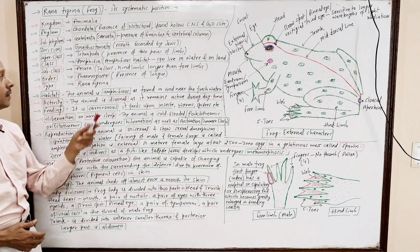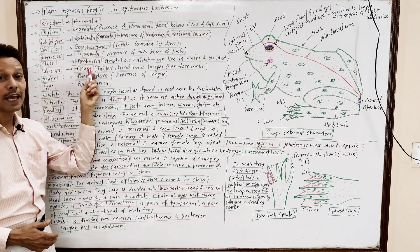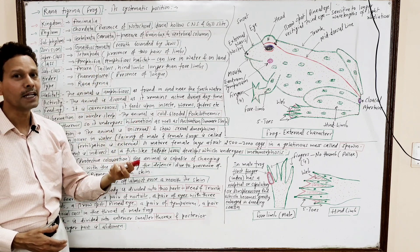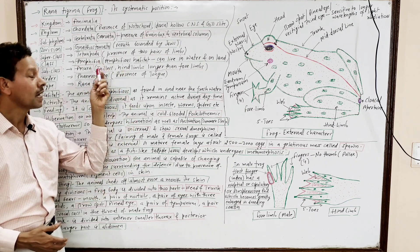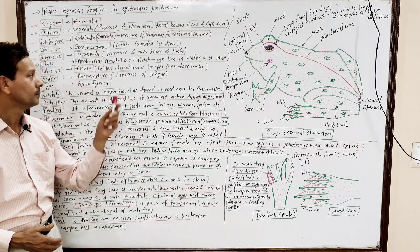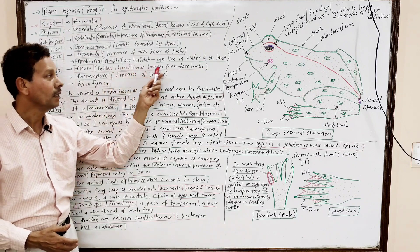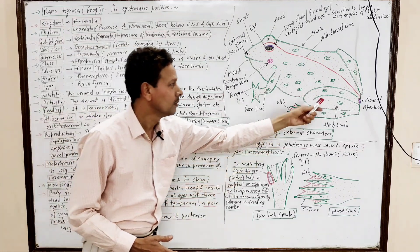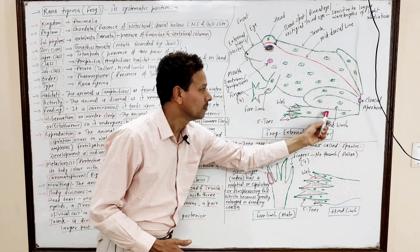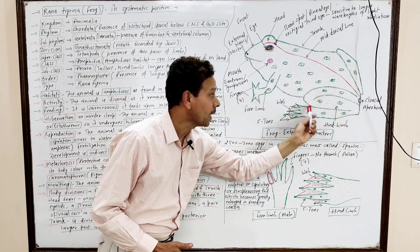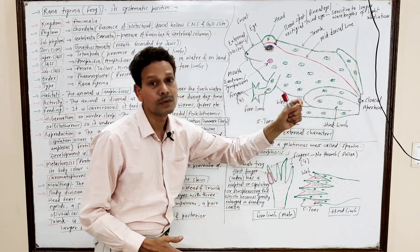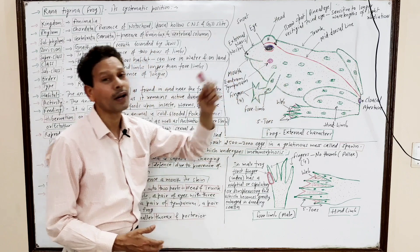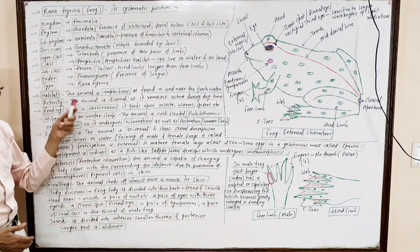Subclass: Anura. The name indicates these are tailless animals. Hind limbs are longer than the forelimbs. This hind limb is longer as compared to the forelimb.